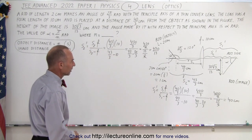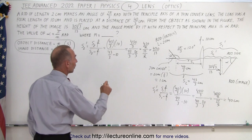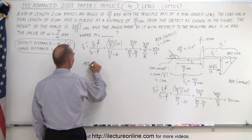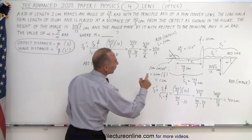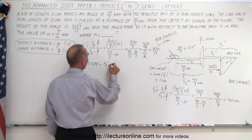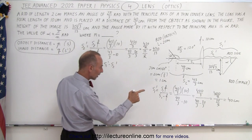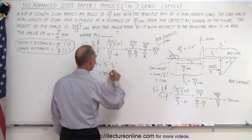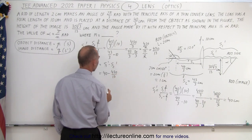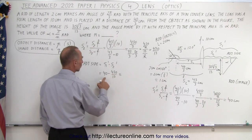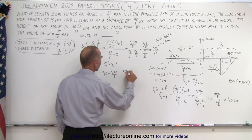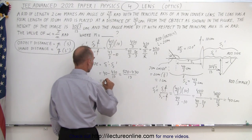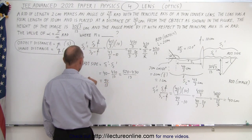Now we can find the adjacent side. The adjacent side equals s1 prime minus s2 prime = 40 − 430/13. Using a common denominator of 13: 520/13 − 430/13 = 90 over 13. So the adjacent side is 90 over 13 centimeters.